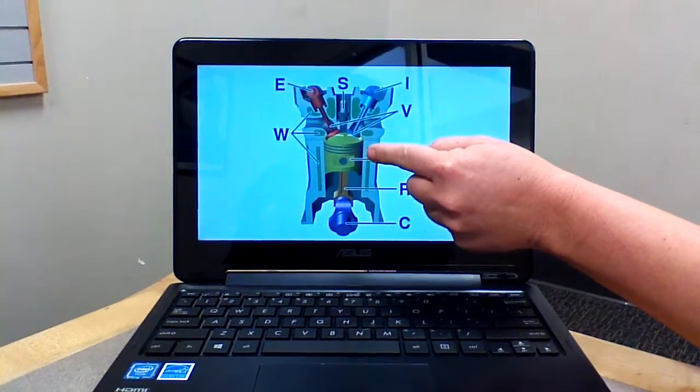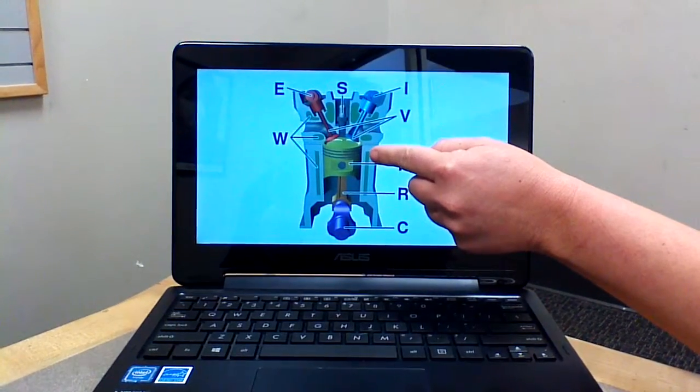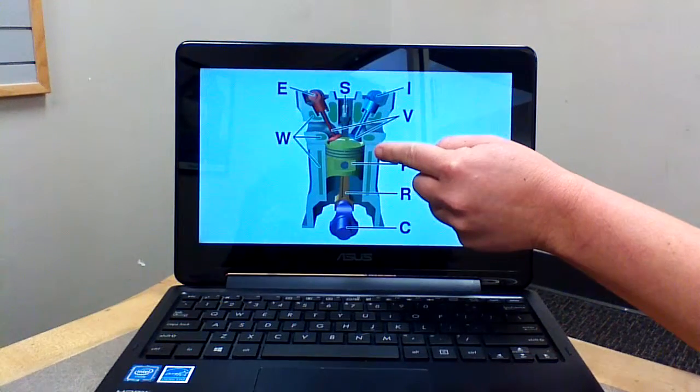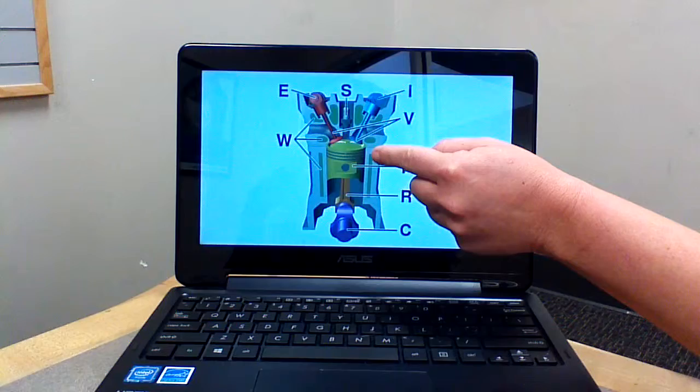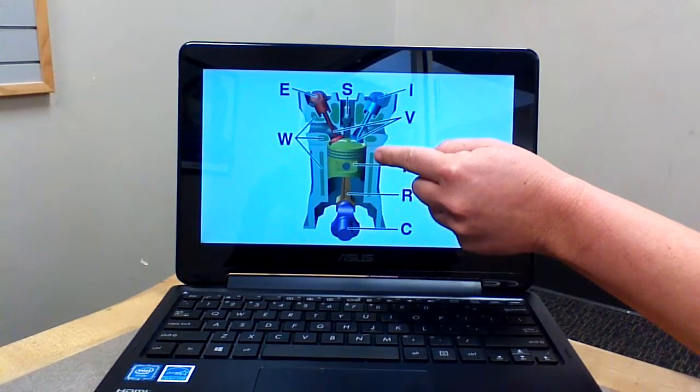This is your piston. It is a metal-moving part in the cylinder attached to the connecting rod. It compresses the air-fuel mixture, then receives the thrust from the burned gases.